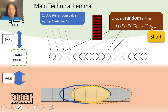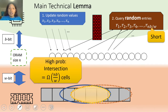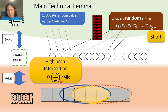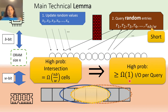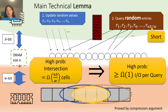Putting it together, we can prove that with high probability, the intersection between the two phases is still roughly the same size in number of cells, but now we use a shorter query sequence. So the query cost is almost one probe or one IO with high probability. This is our main technical lemma. It is very simple and intuitive, but it is also very hard to prove because we don't assume any restriction on the ORAM construction.